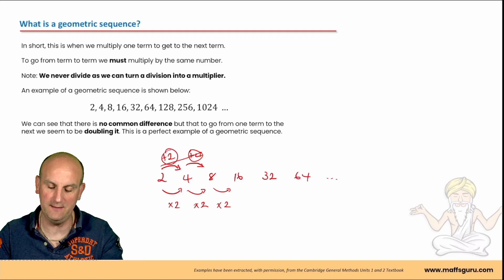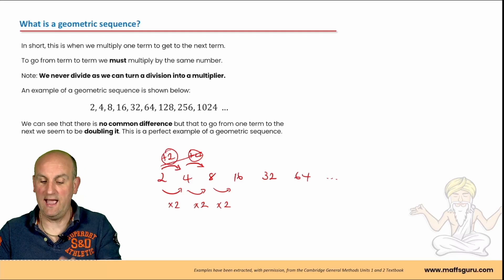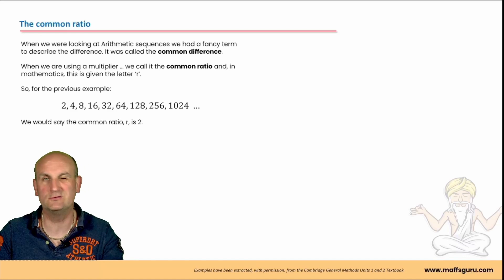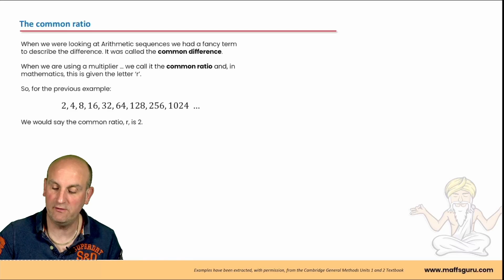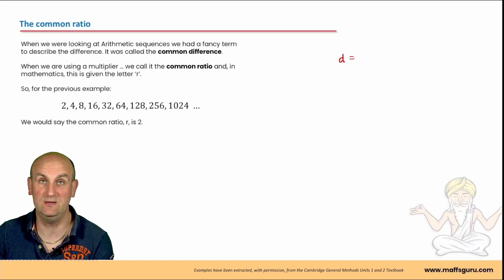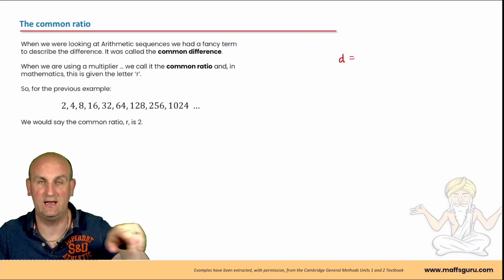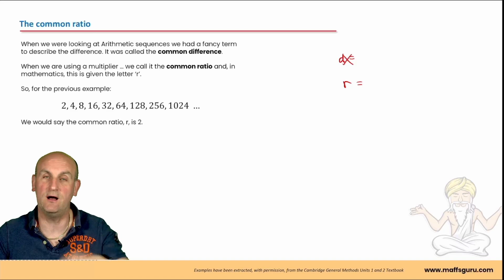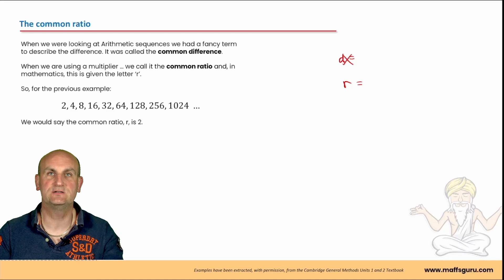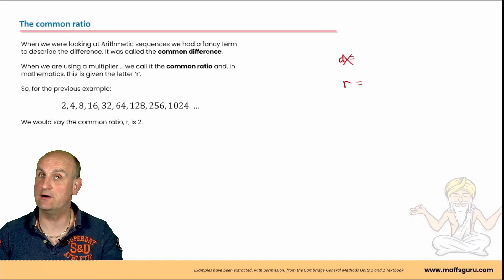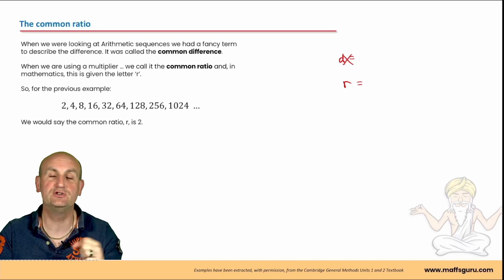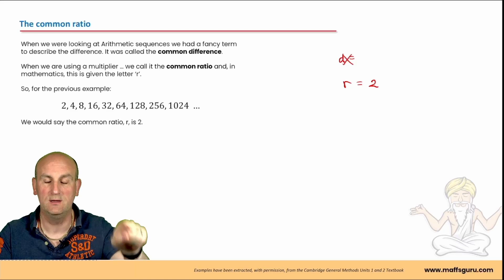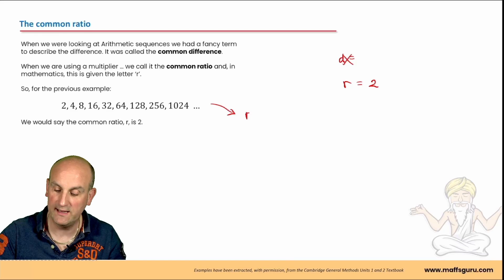There's no common difference here, but what we have is something called a common ratio. In arithmetic sequences we used D for common difference. In geometric sequences we use R — R stands for ratio. R is just a number. So a common ratio of two means I'm multiplying by two to get from term to term. For this sequence, R equals two.